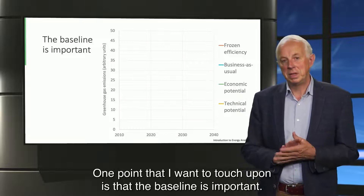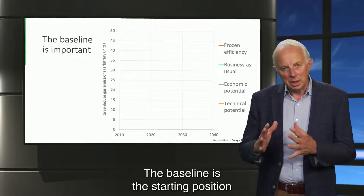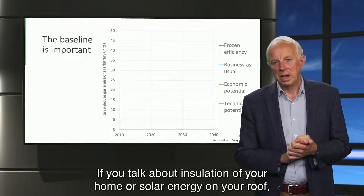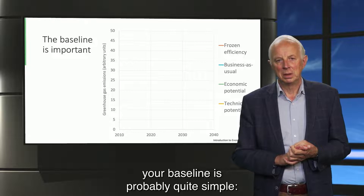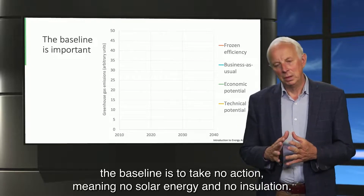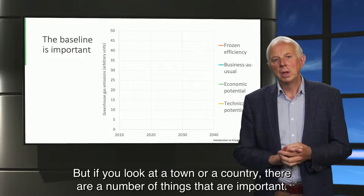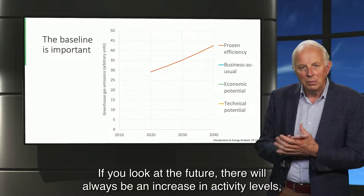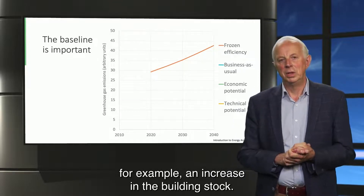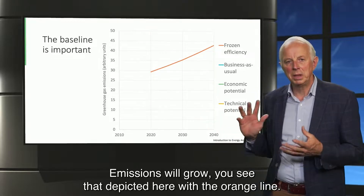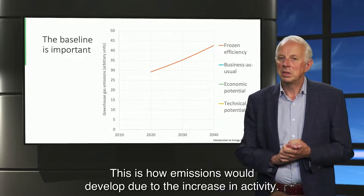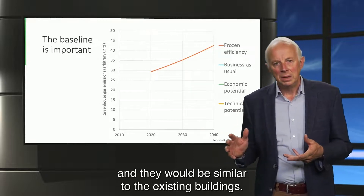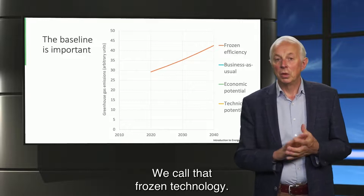One point I want to touch upon is that the baseline is important. The baseline is the starting position from which you determine the emission reduction potentials. If you talk about insulation of your home or solar energy on your roof, your baseline is probably quite simple — the baseline is to take no action, meaning no solar energy and no insulation. But if you look at a town or a country, there are a number of important things. If you look at the future, there will always be an increase in activity levels, for example an increase in the building stock. Emissions will grow — you see that depicted here with the orange line. This is how emissions would develop due to the increase in activity; for example, the number of buildings would increase and they would be similar to the existing buildings. We call that frozen technology.